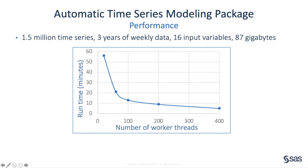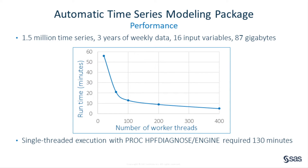Now, a brief note about performance. In this era of big data where datasets can consist of millions of time series, performance is one of the top selling points for SAS Visual Forecasting. To generate the chart you see here, we used an 87 gigabyte dataset with 1.5 million time series as input and ran it with an increasing number of processors. We were able to reduce the runtime from about an hour to around five minutes just by adding nodes — no changes to the code were necessary. It took over two hours to run with our single-threaded infrastructure.